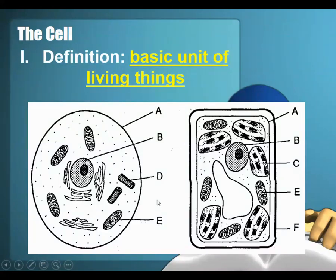I also want you to tell me which one is a plant cell and which one is an animal cell. Go ahead and pause and answer those. Now that you've had a chance to try and remember what each cell is and all the different parts, I'll let you know: the cell on the left is the animal cell, and the cell on the right is the plant cell.